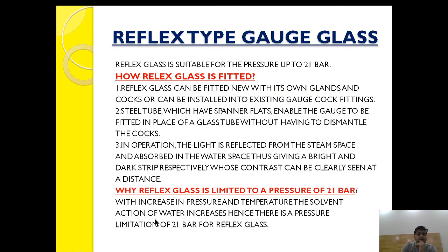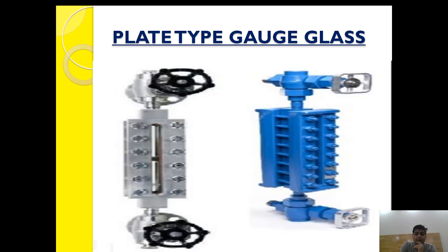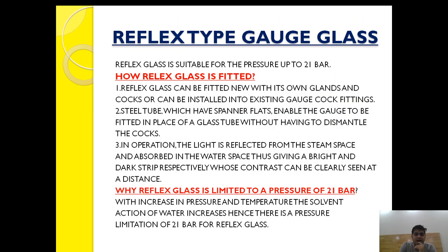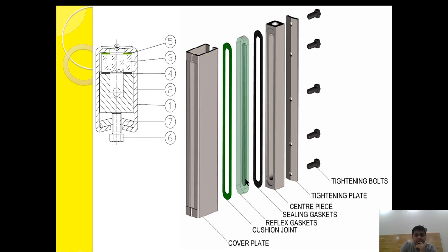The pressure range of the reflex type gauge glass is limited to 21 bar. This is because with increase in pressure and temperature, the solvent action of water on glass increases. In the plate type gauge glass, a mica strip is provided so that it can withstand the high temperature — as temperature increases, the solvent property of water to dissolve glass increases, and the mica strip counteracts this. However, since the mica strip bonding is not provided in the reflex type gauge glass, it is limited to a pressure of 21 bar.